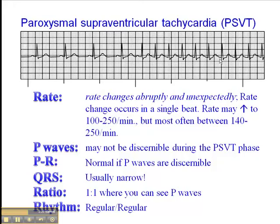Let's see what the heart rate is here. Starting with the underlying rhythm — here's a QRS that falls roughly on a dark line, so that's 300, 150, 175 — the sinus rhythm heart rate is about 75. Now in the tachycardic phase, here's a QRS that falls on a dark line, and the heart rate is 300, 150. So here in the PSVT, the heart rate is 150. We see an abrupt change from 75 to 150 beats per minute — that's really quite dramatic.